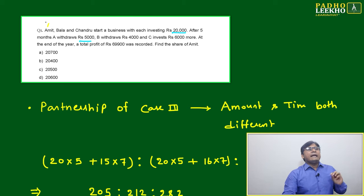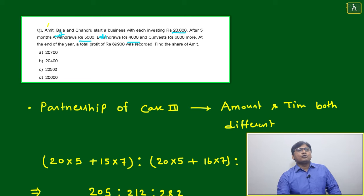After 5 months, Amit withdraws - A means Amit here - Amit withdraws Rs 5,000. B means Bala, Bala withdraws Rs 4,000, and C means Chandru invests Rs 6,000 more.